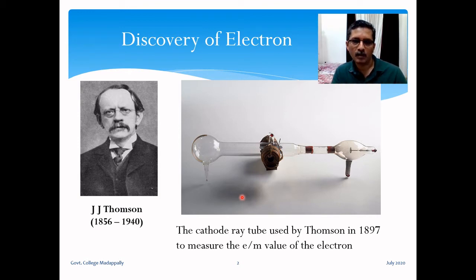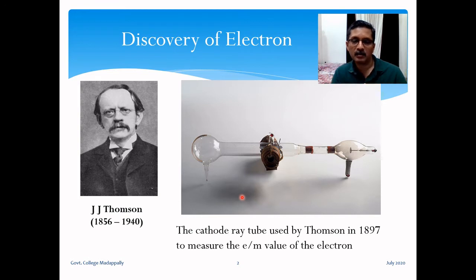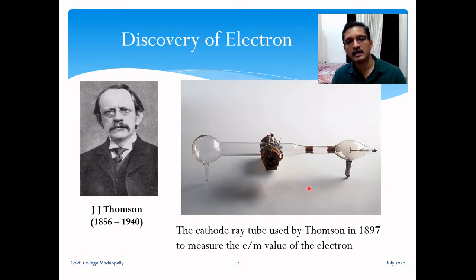That was in the 1850s. Then in the 1870s, William Crookes, an English physicist, modified the Geissler tubes. The main modification was that the pressure inside the Crookes tube could be made very low — as low as one millionth of one atmosphere. This very low pressure could be achieved in the Crookes tube, and Thomson redesigned this Crookes tube to suit his purpose.